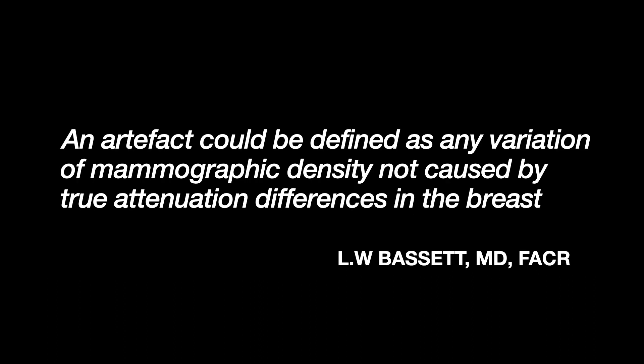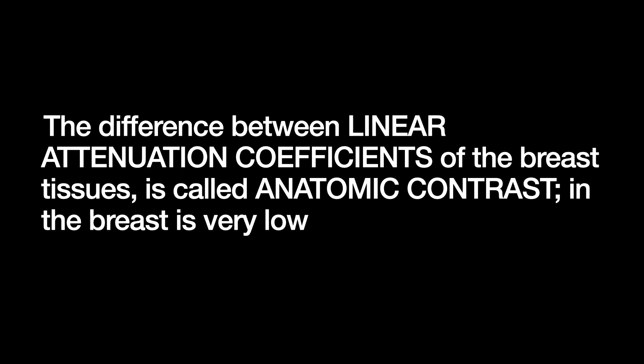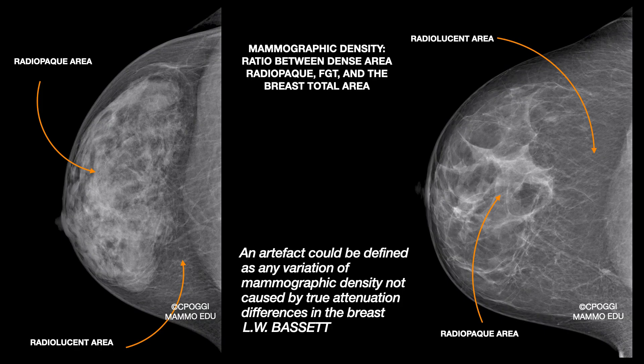This is the definition of artifact by Dr. Bassett: any variation of mammography density not caused by true attenuation differences in the breast. The difference between linear attenuation coefficients of the breast tissues — that is, their different capacity to attenuate the radiant beam — forms what is called anatomic contrast, which is very low in breasts. The image contrast is expressed through different densities: the dense area, radiopaque, is fibroglandular tissue; the non-dense area, radiolucent, is made of fat. The pectoral muscle is dense too, but it is not a breast tissue.